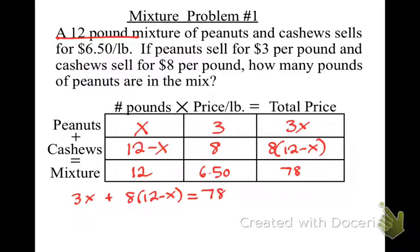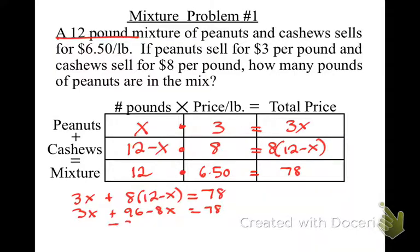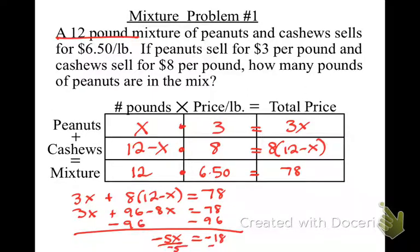My equation is 3X plus 8 times (12 minus X) equals 78. I multiplied across every time. Since I have a quantity in there, 12 times 6.50 is 78. Now I have 3X plus 96 minus 8X equals 78. I'm subtracting 96, and at the same time combining like terms, and I get negative 5X equals negative 18. Divide by negative 5, and X is equal to 3.6.